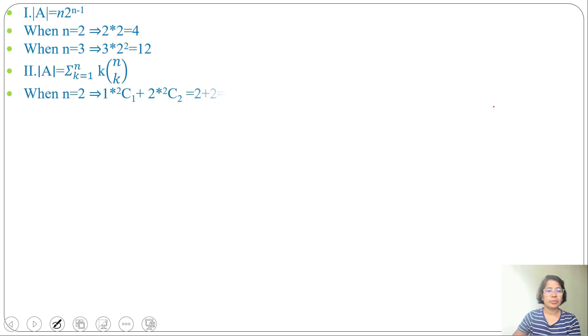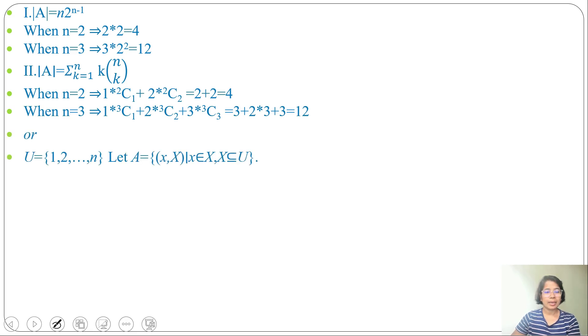Both 1 and 2 are true. This is one way of solving. We just took small examples and we applied the formula in statement 1 and 2 and we found that both are true. Another way: U equals 1 to n and A is the ordered pair (x, X) where x belongs to X and X is a subset of U.